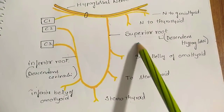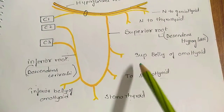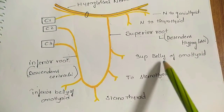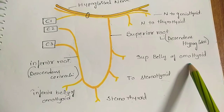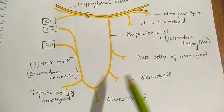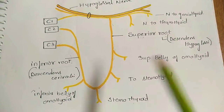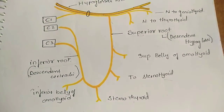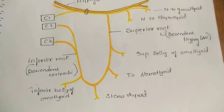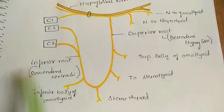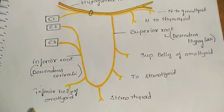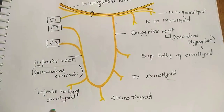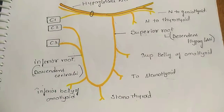The superior root supplies the superior belly of the omohyoid, the sternohyoid, and the sternothyroid. The inferior root supplies the inferior belly of the omohyoid.